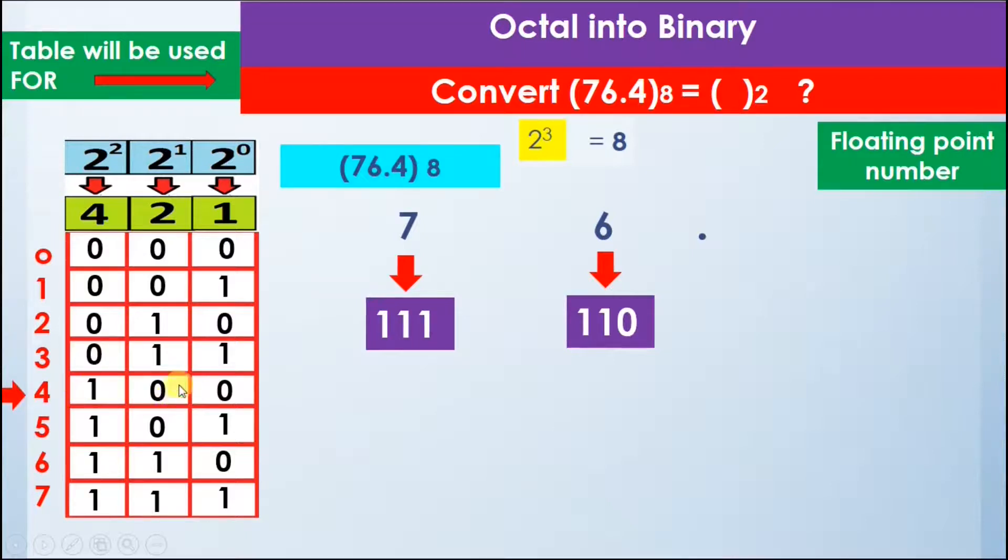So we write 4 as 100. In the end we will combine the result together and the decimal point will remain at its place. So the final answer is 111 and then 110 and then comes the decimal point and then 100.